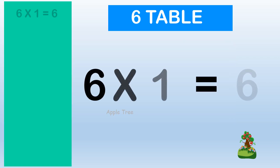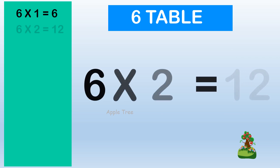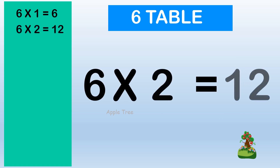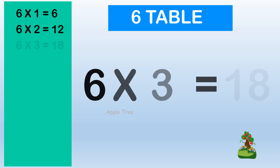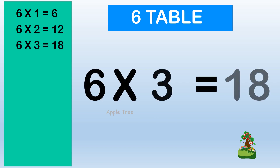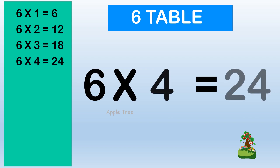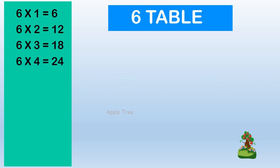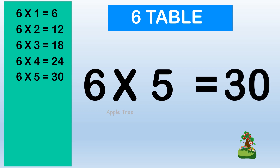Table for 6. 6 × 1 = 6, 6 × 2 = 12, 6 × 3 = 18, 6 × 4 = 24, 6 × 5 = 30.